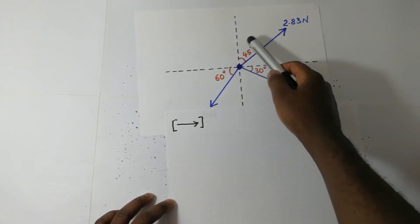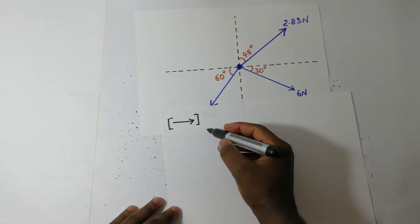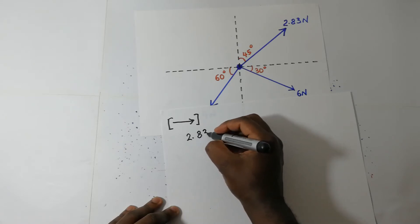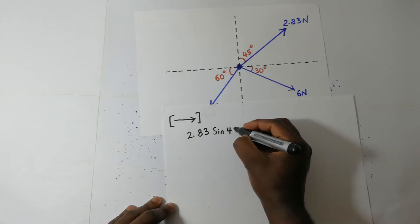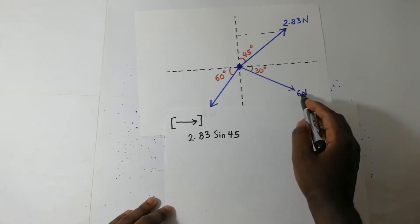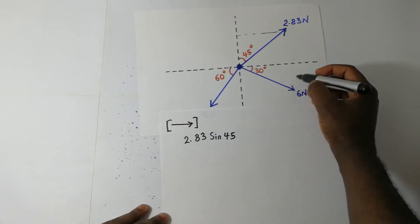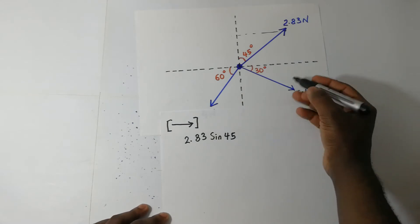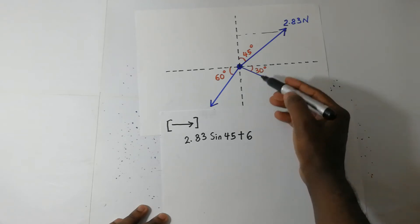We'll start with this force right there. So we're resolving this along the X axis. This is going to become 2.83 Newtons, and along the X we have 2.83 times sine of 45. This is positive because this is happening in the positive direction. Then we go to this 6 Newton force. Resolving this along the X axis, it is still in the positive side of the X axis, so it's going to be a positive value: plus 6 times cosine of 30 degrees.